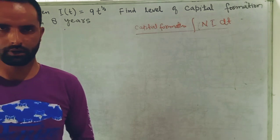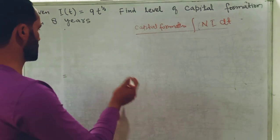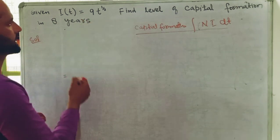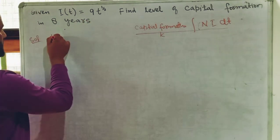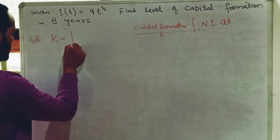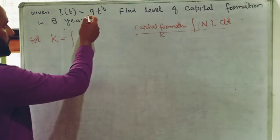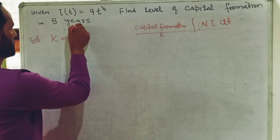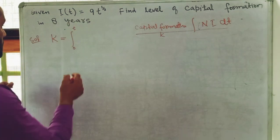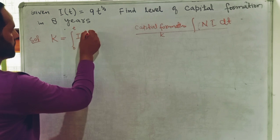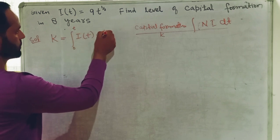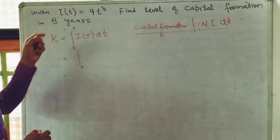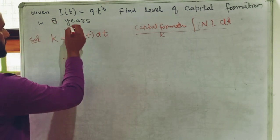To find the capital formation, we integrate the given net investment function with respect to time. We denote capital formation by K, so K is equal to the definite integral from 0 to t of the investment function with respect to time. Here the lower limit is 0 and our time period is 8.